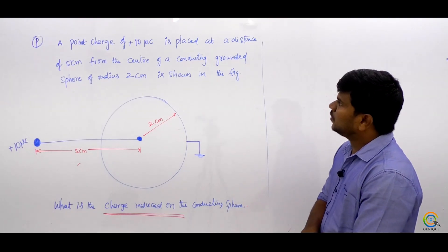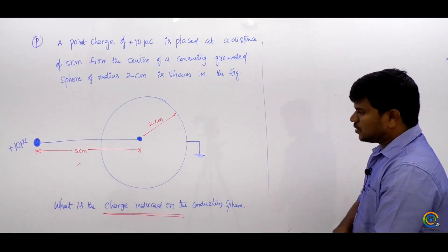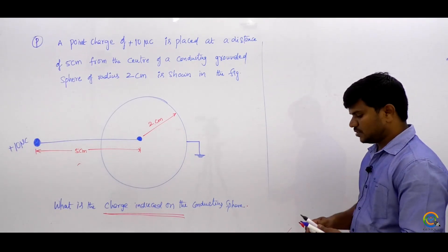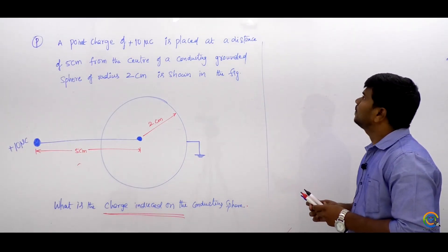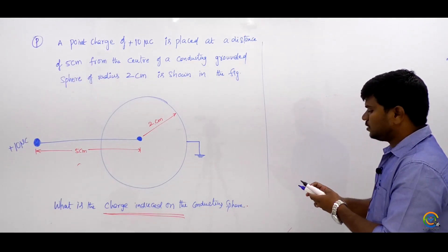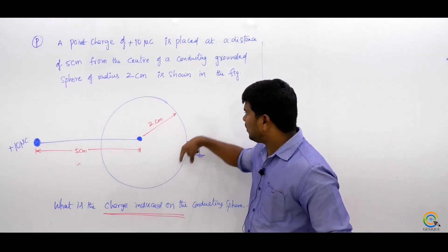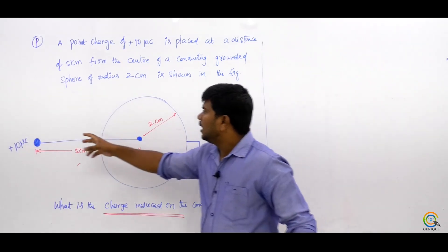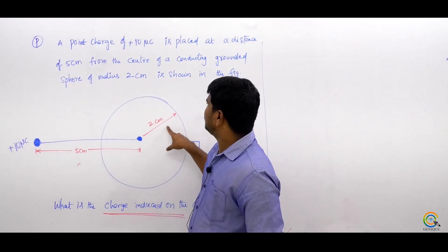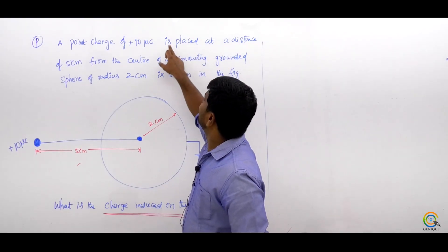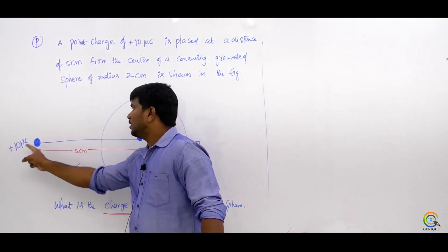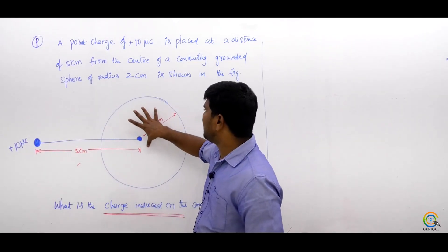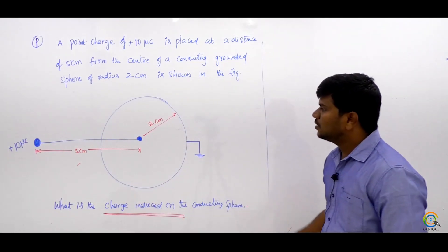It is an IES question. The charge induced in the conducting sphere — we have to go to the concept. Suppose it is a conducting sphere of radius 2 centimeters, and at a distance of 5 centimeters from the center, plus 10 microcoulombs is placed. Due to this, there will be some induction. Find that induced charge.